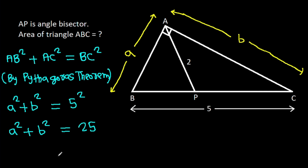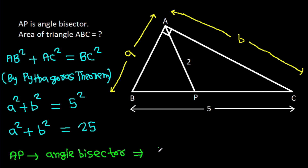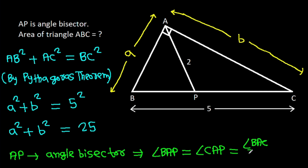AP is the angle bisector. That means angle BAP equals angle CAP, which equals angle BAC over 2. Since angle BAC is 90 degrees, each half is 45 degrees.